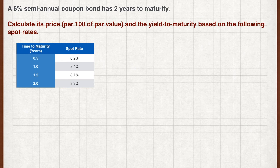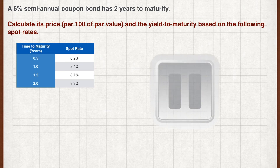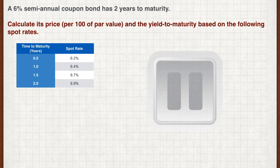Let's conclude this lesson with an exercise. A six percent semi-annual coupon bond has two years to maturity. Calculate its price and the yield to maturity based on the following spot rates. Pause the video now to work out your answers.